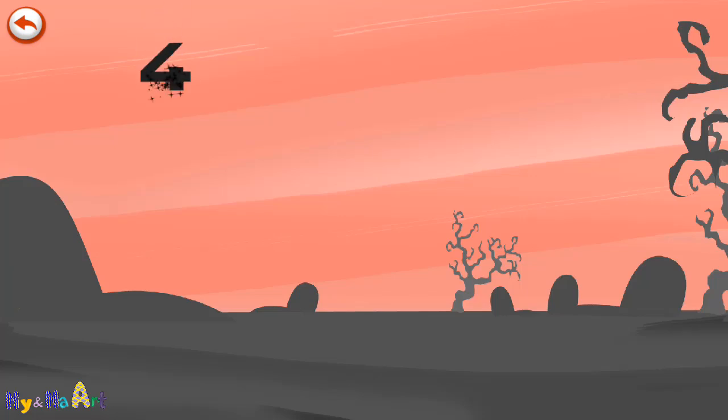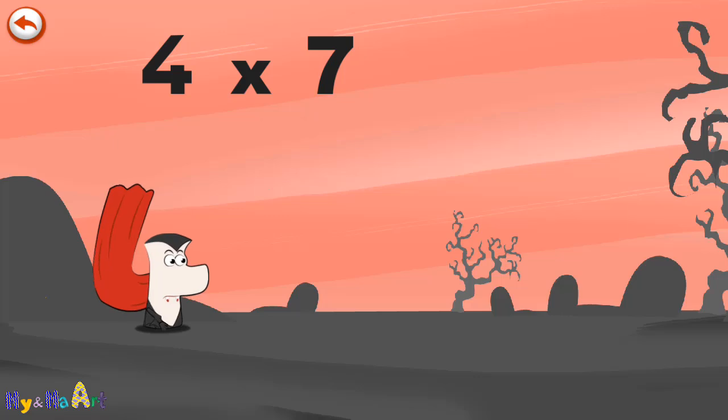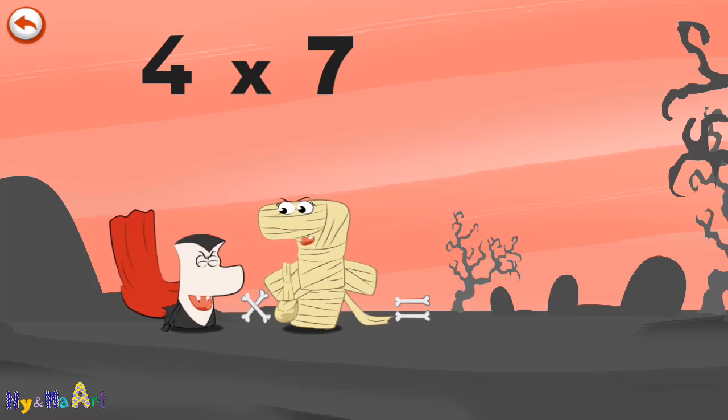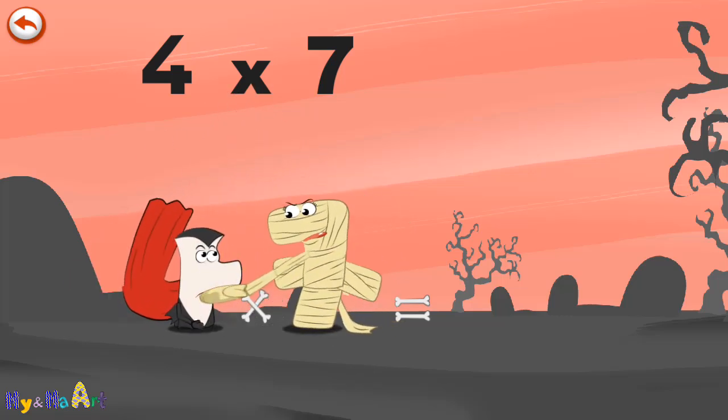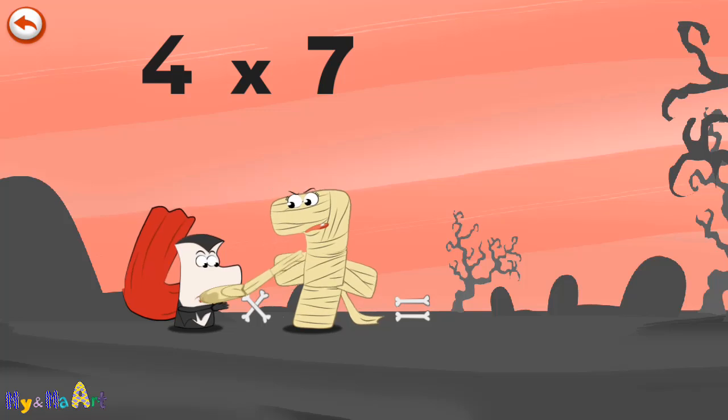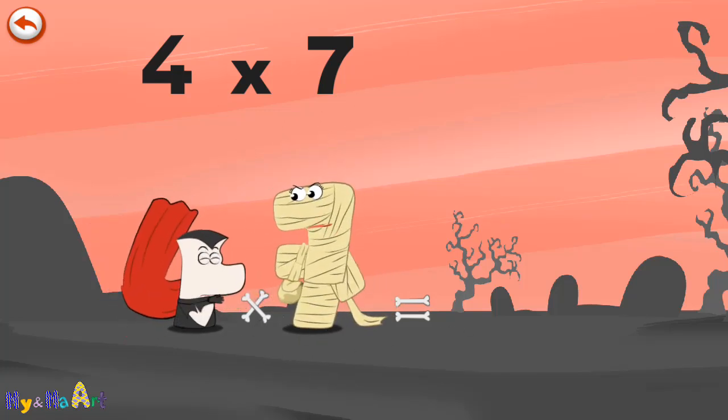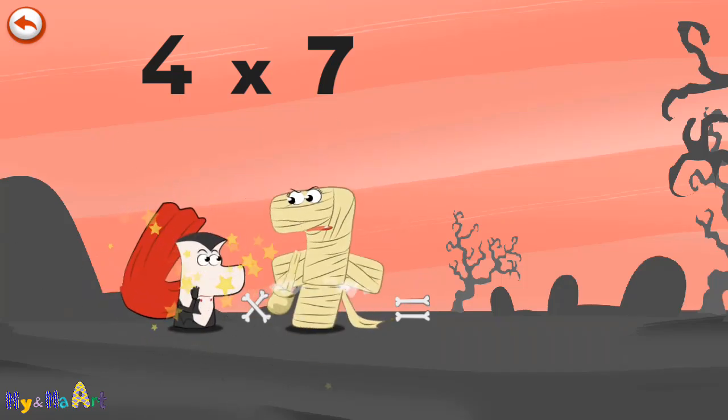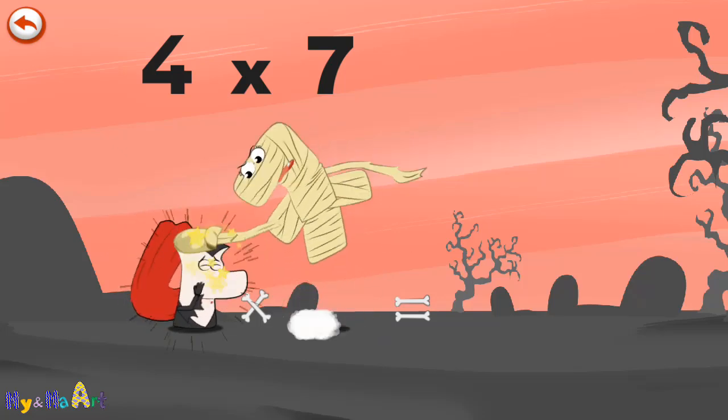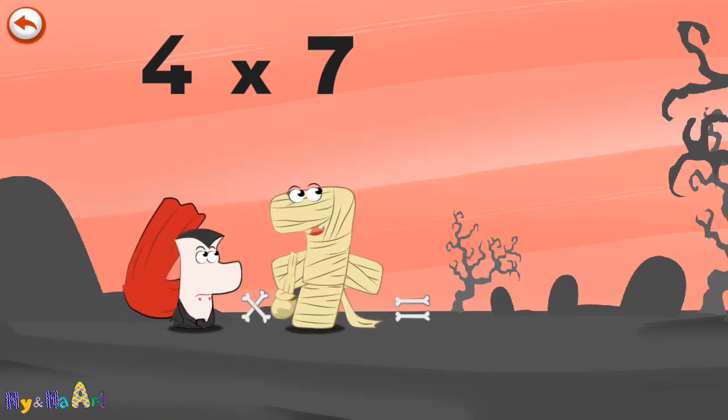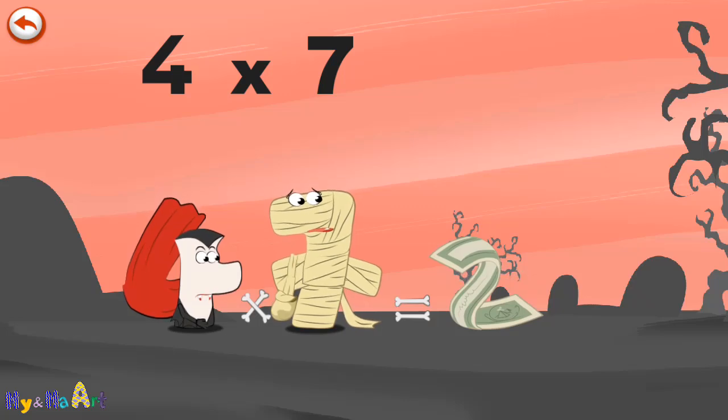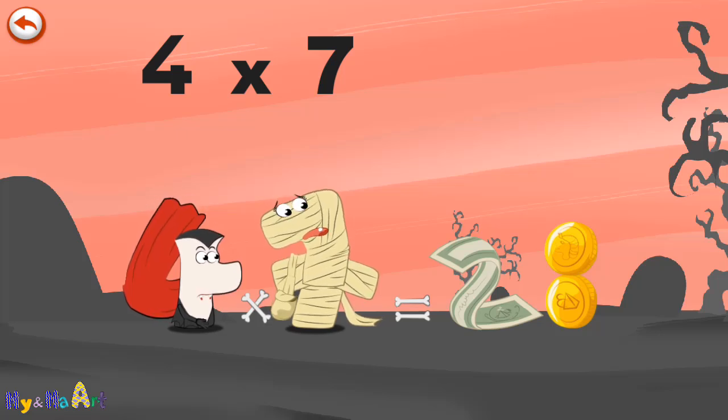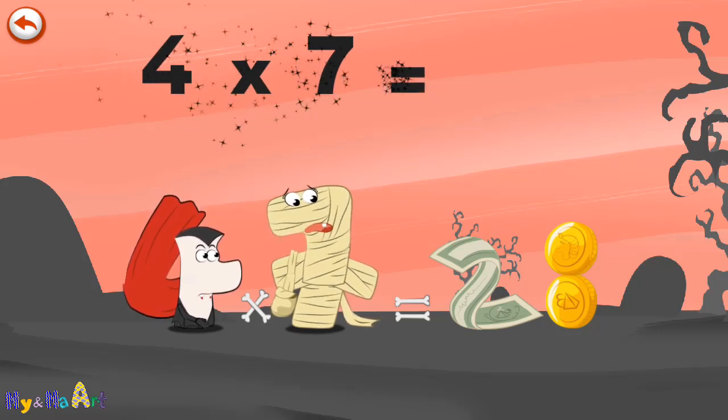What's the story of four times seven? When Vamp four sees the mummy Ram seven, he can't help biting her. But he only manages to take a bite out of the mummy's handbag. She is so angry she rears up and hits Vamp four on the head, spilling everything in her bag: a fine banknote in the shape of a two and several coins which pile up in the shape of an eight. We have an economic issue. Four times seven is twenty-eight.